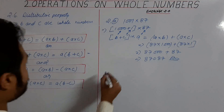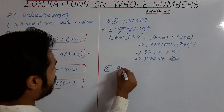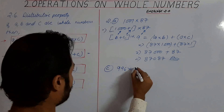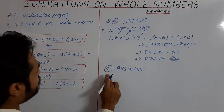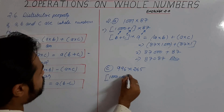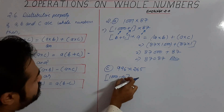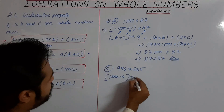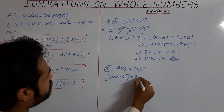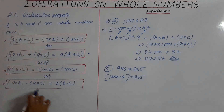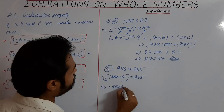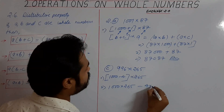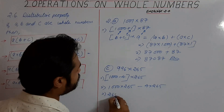Next, we will solve 996 into 265. It is very difficult to multiply 996 by 265 directly, but if we write 1000 minus 4 in place of 996 — since 1000 minus 4 equals 996 — and multiply it by 265, then this statement is similar to the distributive property for subtraction: A multiplied by B minus C equals A into B minus A into C.